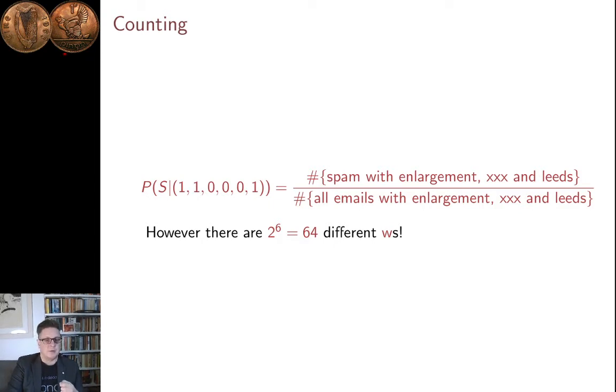And so, what they might do is they might take all of these emails, normal emails and emails that you have helped them by marking as spam, and they'd count the number of spam emails containing the words enlargement, XXX, and leads, and not the other three words, and divide it by all the emails that contain those three words and not the other three. So, this is the spam emails given the three words over all emails with the three words. And that will give you an estimate of the conditional probability of spam given that characteristic of the email.